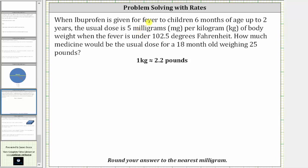When ibuprofen is given for fever to children six months of age to two years, the usual dosage is five milligrams per kilogram of body weight when the fever is under 102.5 degrees Fahrenheit. How much medicine would be the usual dose for an 18-month-old weighing 25 pounds?